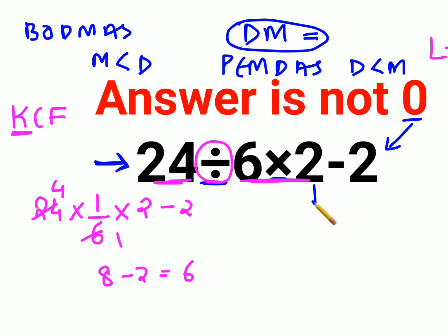If your question was 24 divided by brackets and then you had 6 into 2 minus 2. So what does this bracket specify? Brackets or parenthesis always specify that this has to be done first.